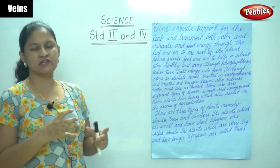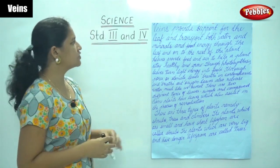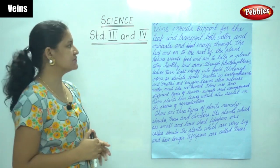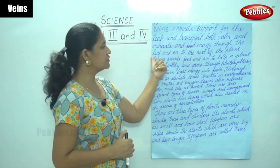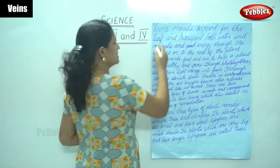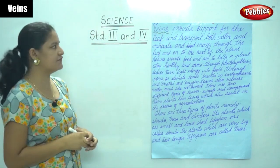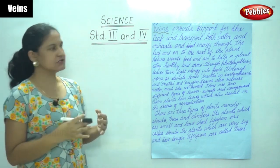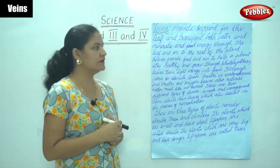Next we are going to talk about the veins that are present on a leaf. Veins provide support for the leaf and transport both water, minerals, and food energy through the leaf to the rest of the plant. So the main function of the veins is to provide support to the leaf and transport food, water, minerals, and food energy through the leaf to the rest of the plant.